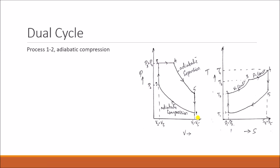The first process is adiabatic compression — the compression of the air takes place adiabatically, no heat is added or rejected. Pressure increases from P1 to P2 and volume reduces from V1 to V2. On the TS diagram, the temperature increases to T2 and entropy remains the same. After compression, the first heat addition takes place at constant volume — process 2 to 3. The pressure further increases from P2 to P3 while volume remains the same, and the temperature increases from T2 to T3.